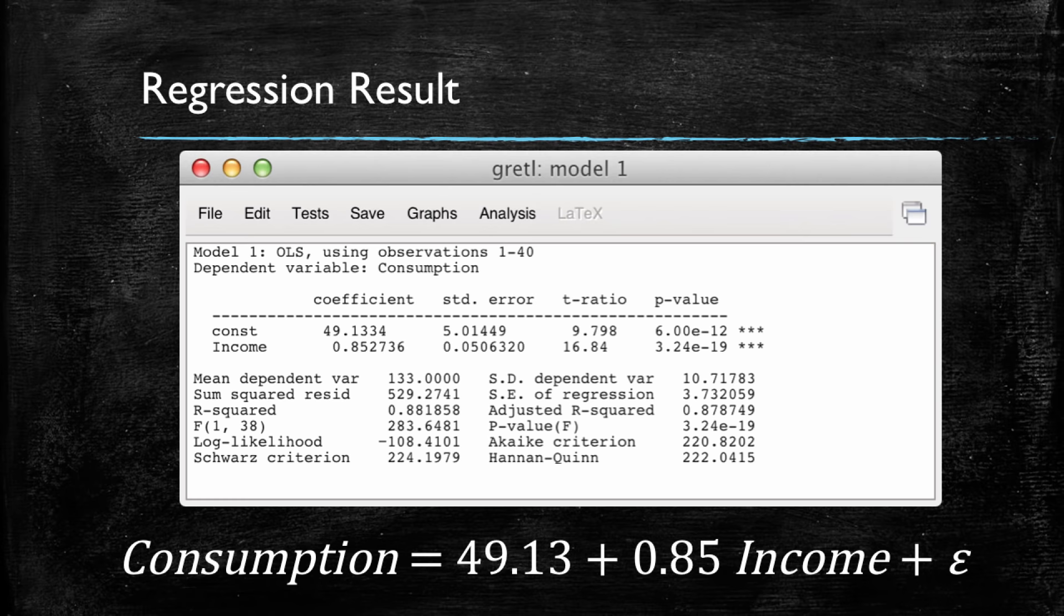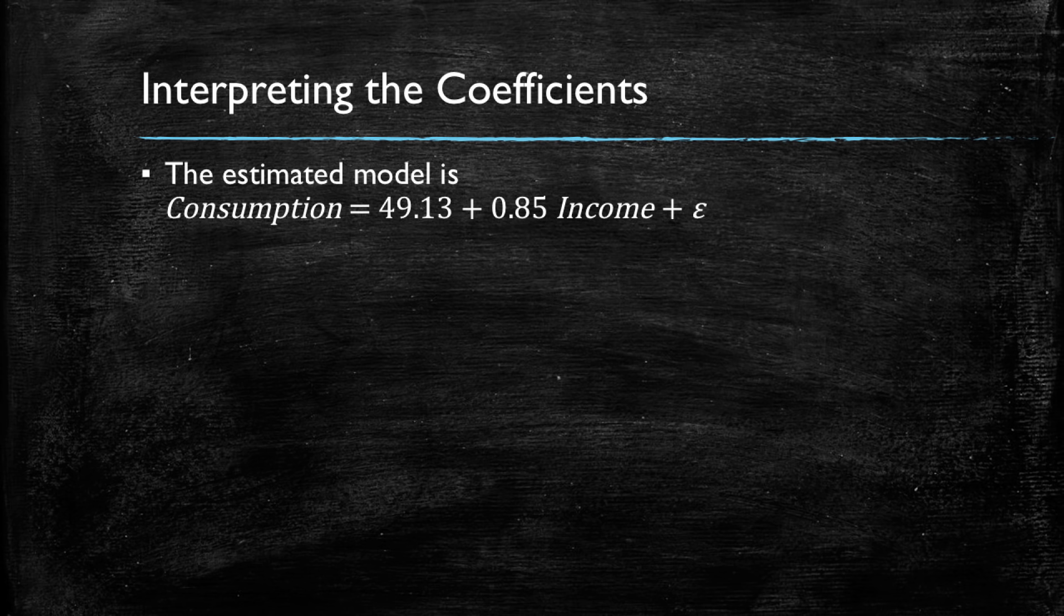Remember, our model is this one right here. Now, let's start with 49.13. If income were zero, consumption would take this value and consumption would be 49.13. So, using this, we could interpret the intercept as the consumption level of a family with zero income.